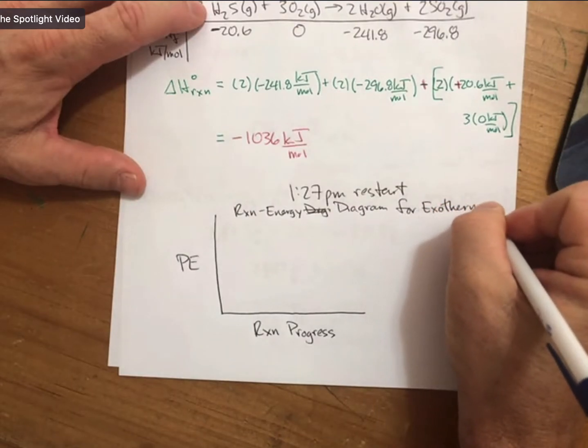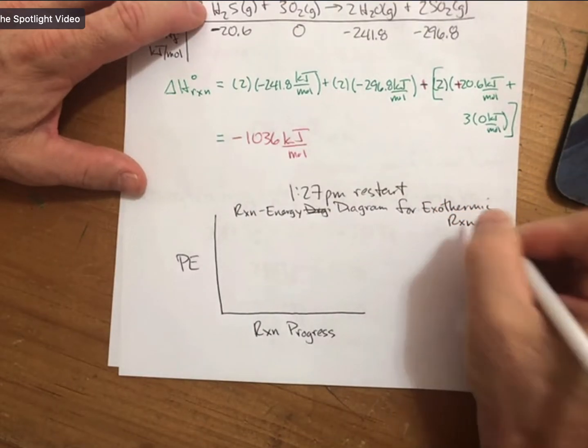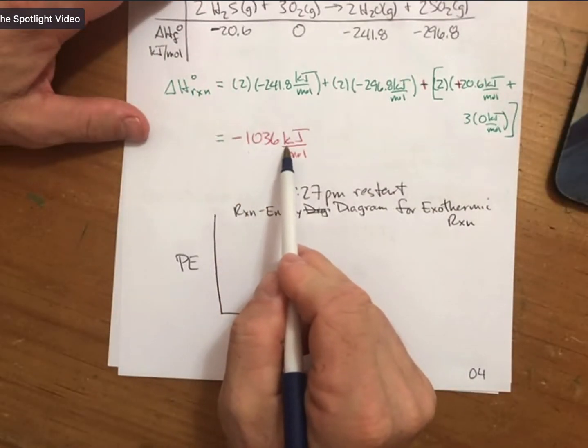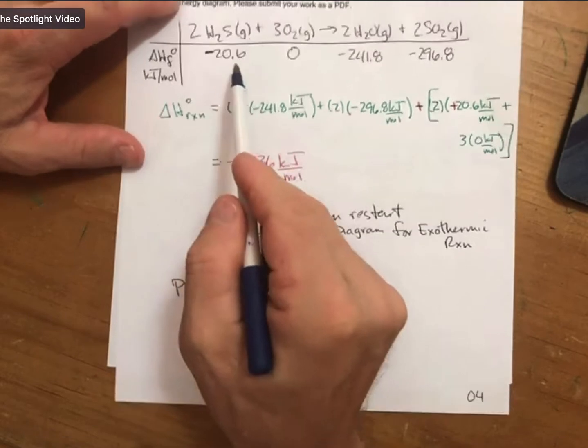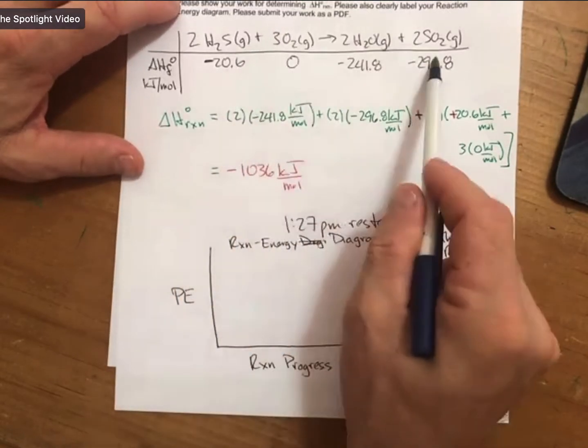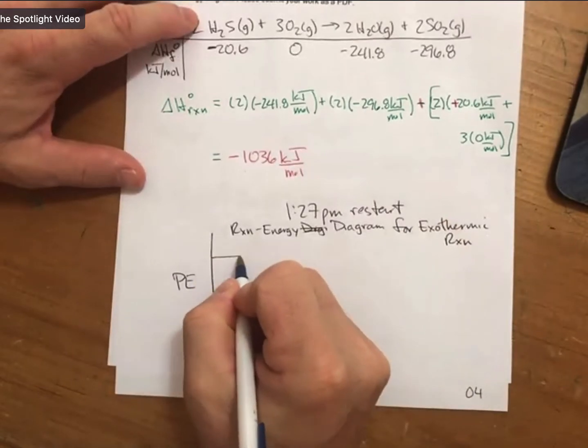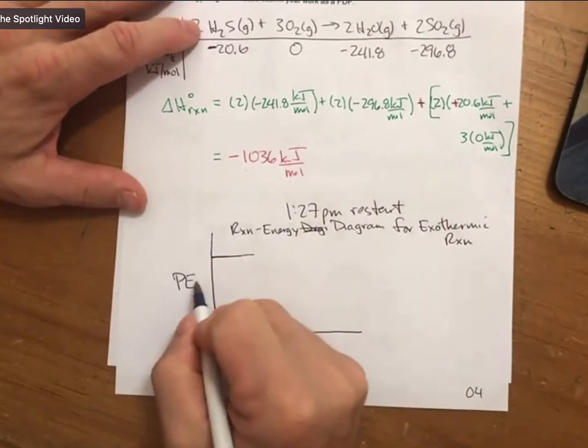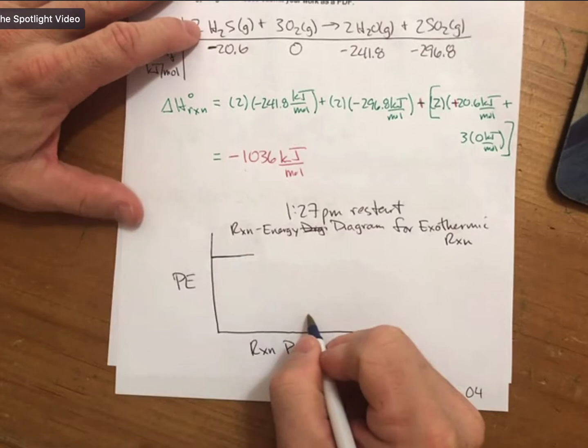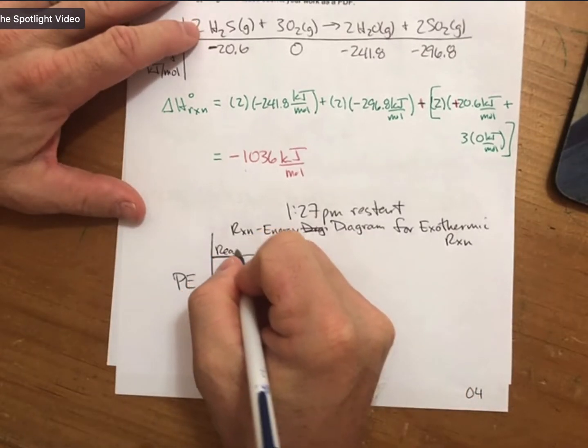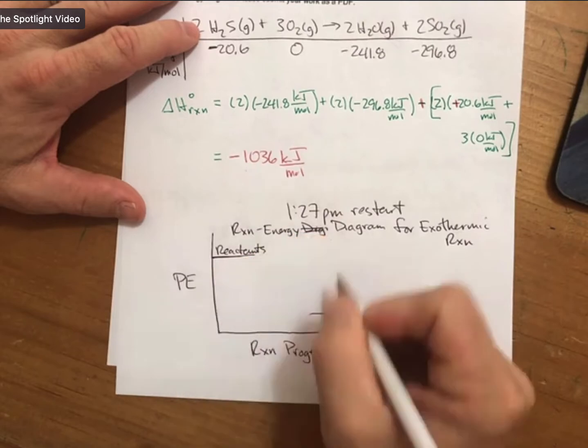The reaction gives off energy as it converts reactants into products. What that means is that the reactants have to have higher potential energy than the products. So I'm going to put my reactants here and my products down here.